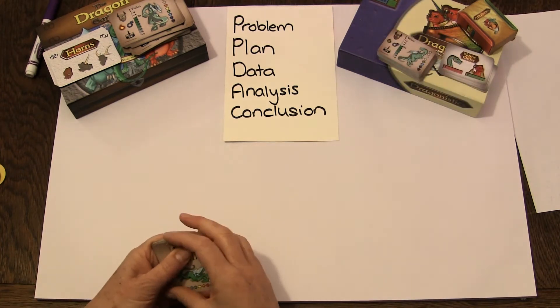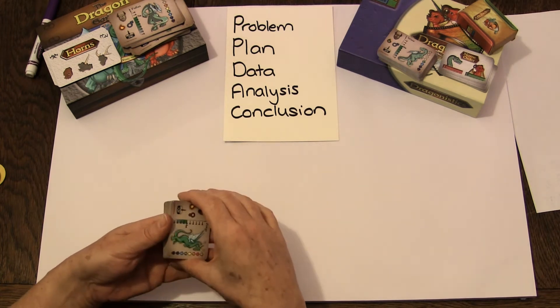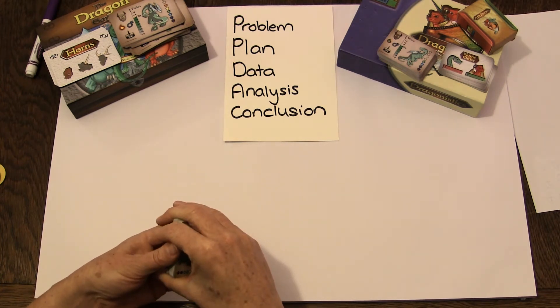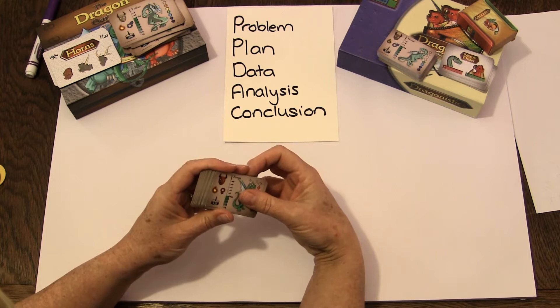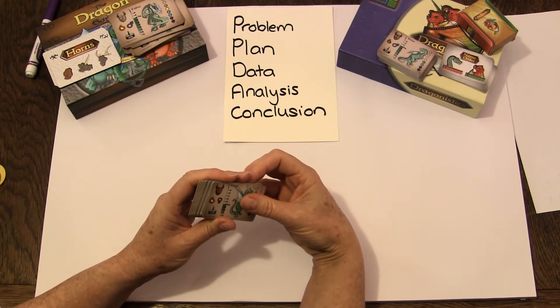But here's an example as we might want to look at what kind of behaviour. So in this one we're going to answer the question: I wonder how many of my dragons are friendly?